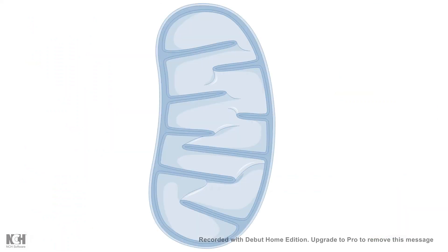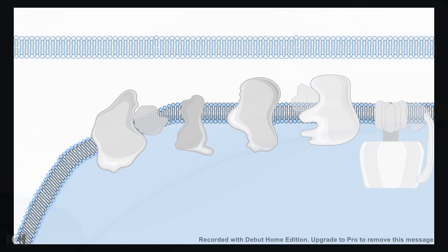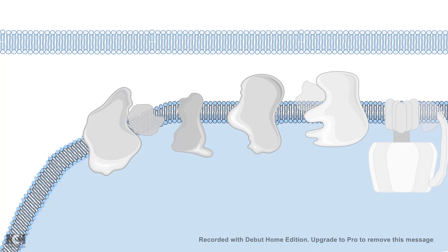Now let's talk about the inner membrane and its components, because the inner membrane is pretty different from the outer membrane. The inner membrane has the electron transport chain and the machinery for ATP production — the ATP synthase. So let me introduce you to the components of the electron transport chain.